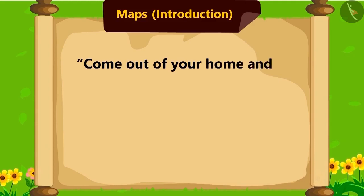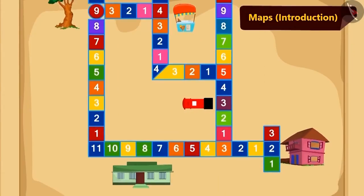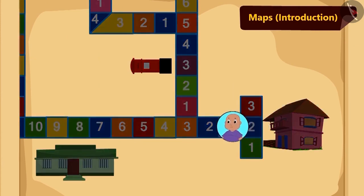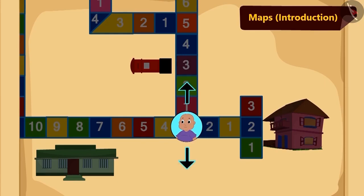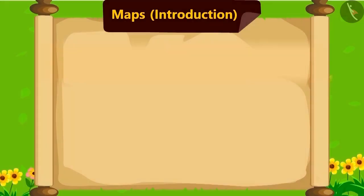Bablu has started reading the instructions: come out of your home and move ahead, turn right from the third tile. Bablu came out of his house and reached the third tile, but now he is unable to understand which one is the right direction. Children, do you know how to identify the left and the right directions?